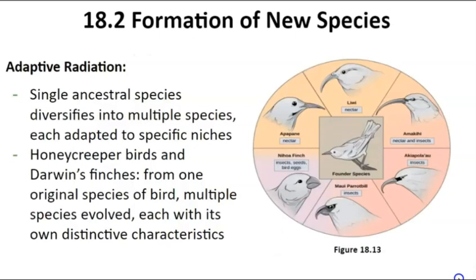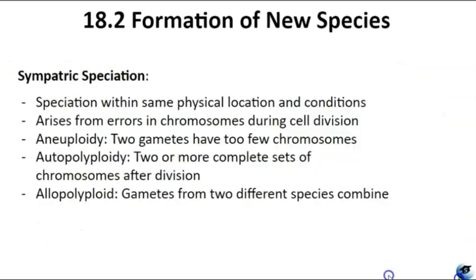In certain cases, a single species disperses across an area and adapts to distinct niches — isolated habitats — which can result in multiple speciation events originating from one common ancestor, known as adaptive radiation. Islands like the Hawaiian Islands provide ideal conditions for adaptive radiation due to their geographic isolation. The Hawaiian honeycreeper and Darwin's finches are both examples of adaptive radiation.